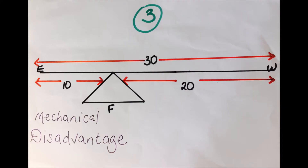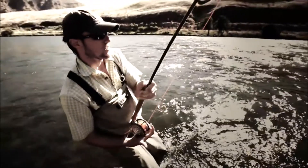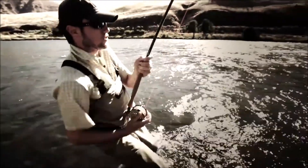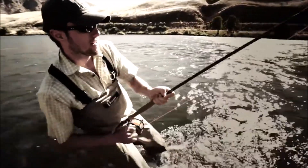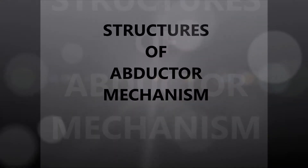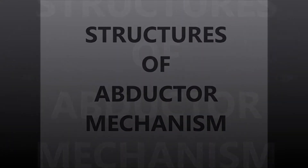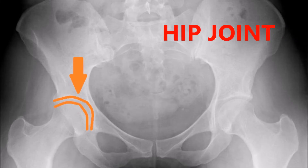Third, if the fulcrum is closer to the effort, the effort arm is shorter than the weight arm. In this case, a mechanical disadvantage occurs because the fulcrum is closer to the effort and more effort is required to lift the weight.